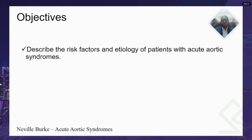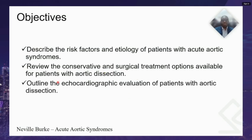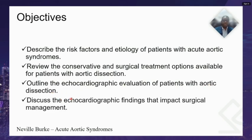The objectives of our talk today will include briefly describing the risk factors and etiology of patients with acute aortic syndromes, as well as reviewing the conservative and surgical management options available for patients with aortic dissection. Then we'll outline the echocardiographic evaluation of patients with this disease, particularly aortic dissection, and discuss how these findings can impact surgical management.